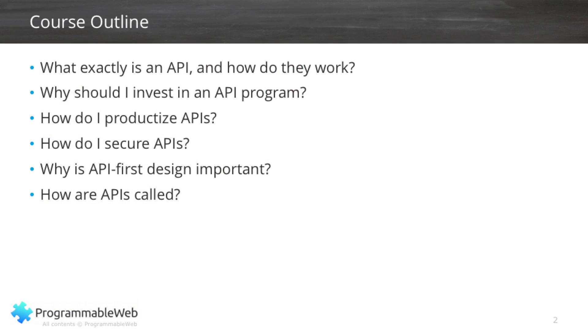In this series, we're covering six primary points. One of them is: what exactly is an API, why are they important, and how do they work? Why should you invest in APIs and what sort of benefits do you get from them? Why should you treat APIs as a product? That's very important — you don't want to treat them as a sort of second-class thought. They're a first-class citizen in your organization.